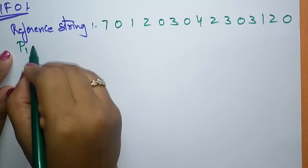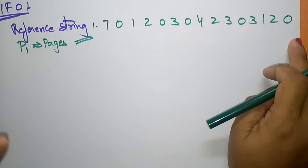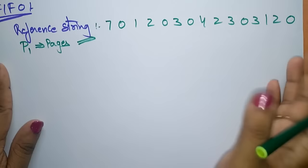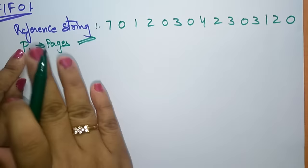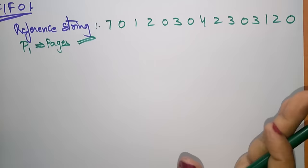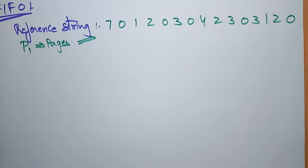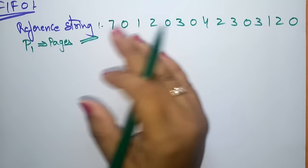The main memory at a time can't store all these pages because the main memory size is less compared to the logical memory. Whenever the CPU is demanding a page, it has to check if that page is present in the main memory or not. If it is not present, it has to get it from secondary memory and store it in main memory. If the page is not found in main memory, we call it a page fault.